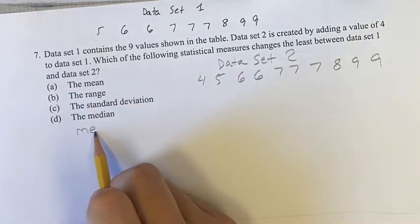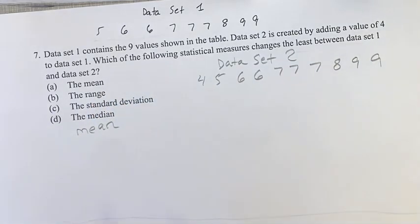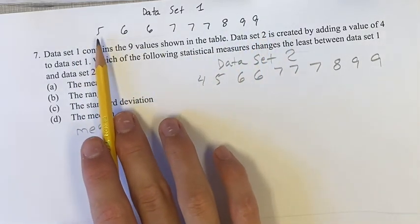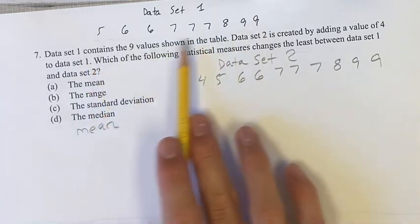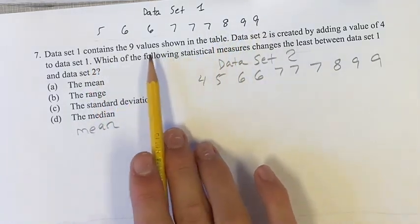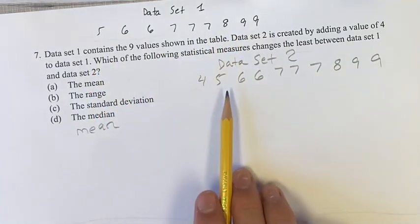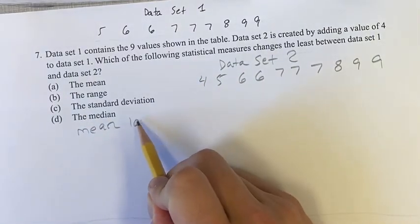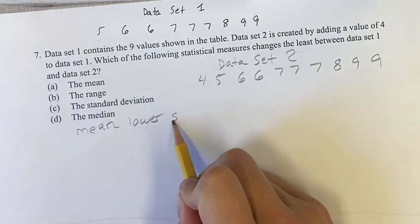Let's start with the mean. The mean is the average value, so the total sum of these values divided by the number of values. Adding 4 into this is going to lower that a little bit, so the mean is going to be lower slightly.